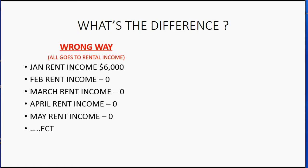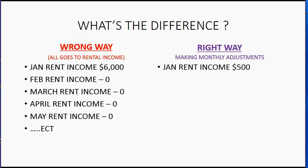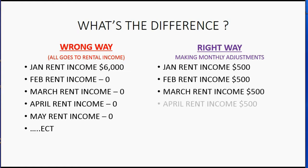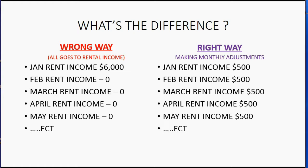However, if you record it the right way — making monthly adjustments between unearned rent and rental income — January's rental income will be the correct amount at $500, February's rental income will be $500, and March, April, May, etc. will all have the correct amounts of rent income on their individual monthly financial statements, because the tenant really does only pay $500 a month.